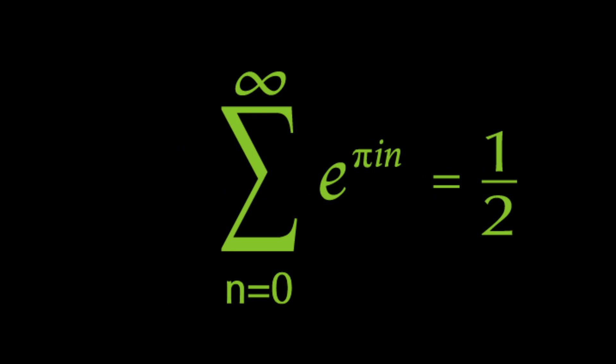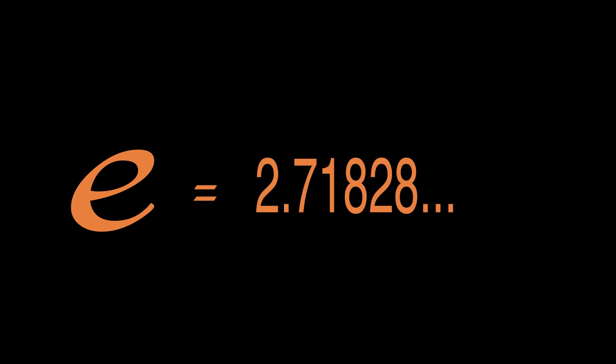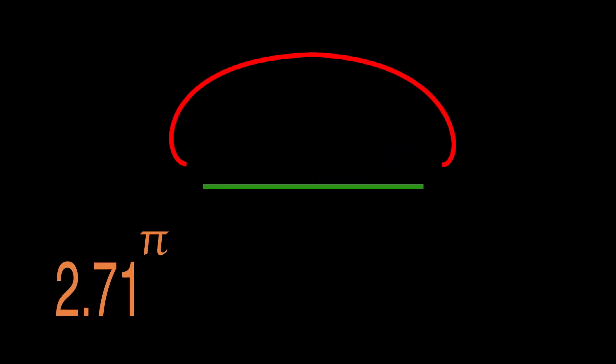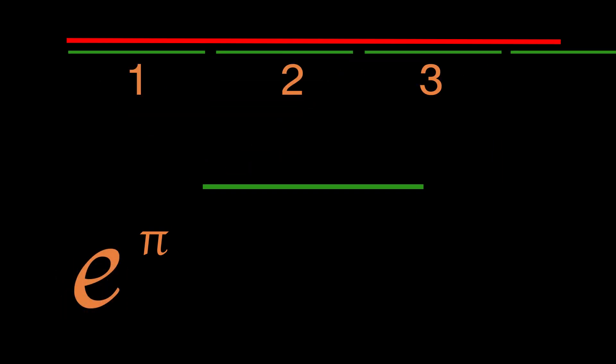So if you're not familiar with it, e represents a special math constant, the irrational number 2.7182 and so on. One of those infinite numbers. Take this number to the power of pi. Pi, of course, is the ratio of the diameter to the circumference of a circle.